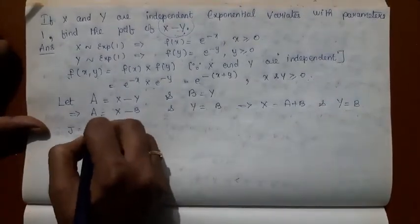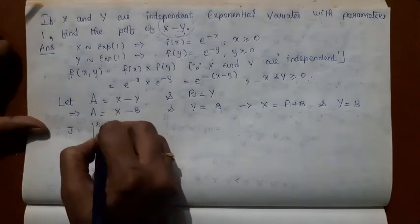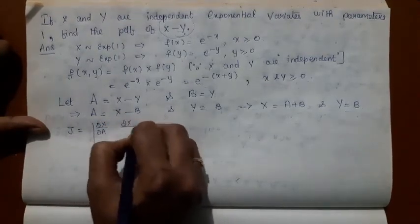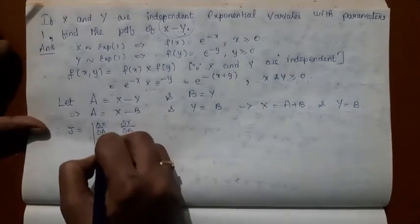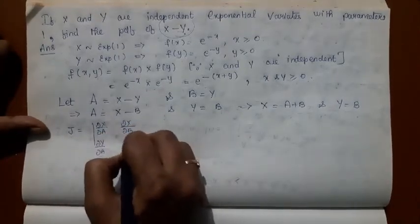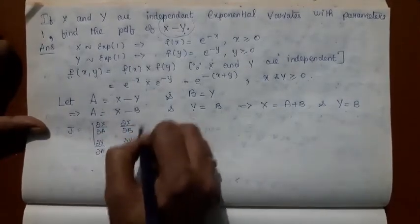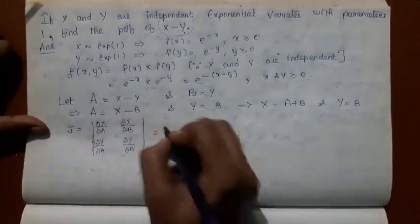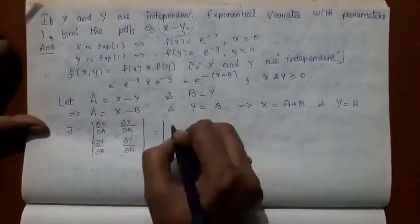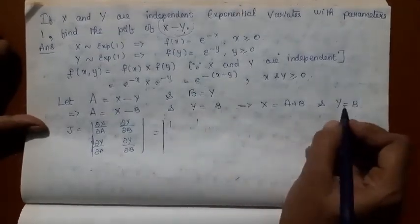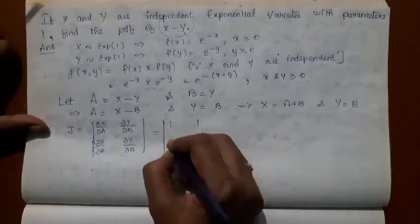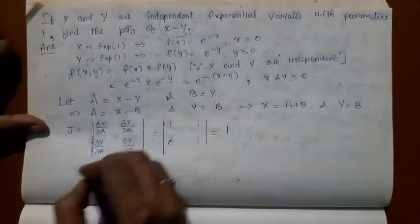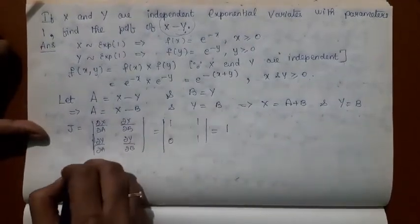Now let us compute the Jacobian of the transformation. We have ∂x/∂a = 1, ∂x/∂b = 1, ∂y/∂a = 0, and ∂y/∂b = 1. So the Jacobian of the transformation is 1.